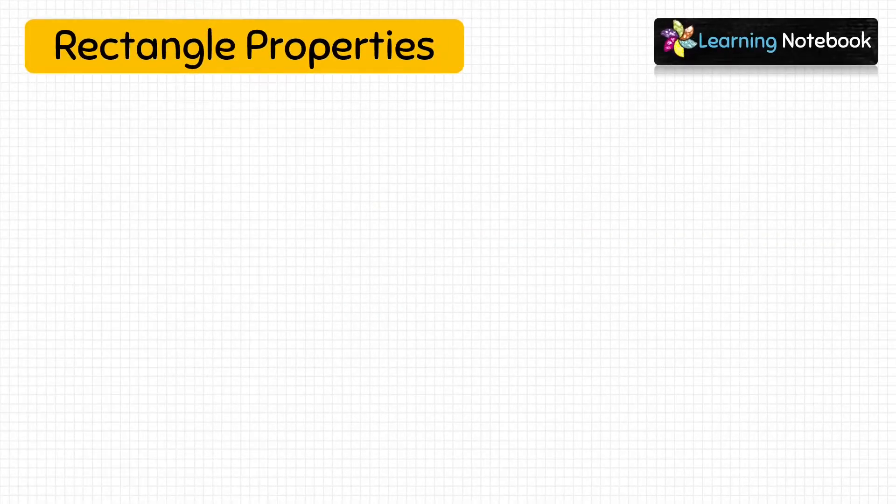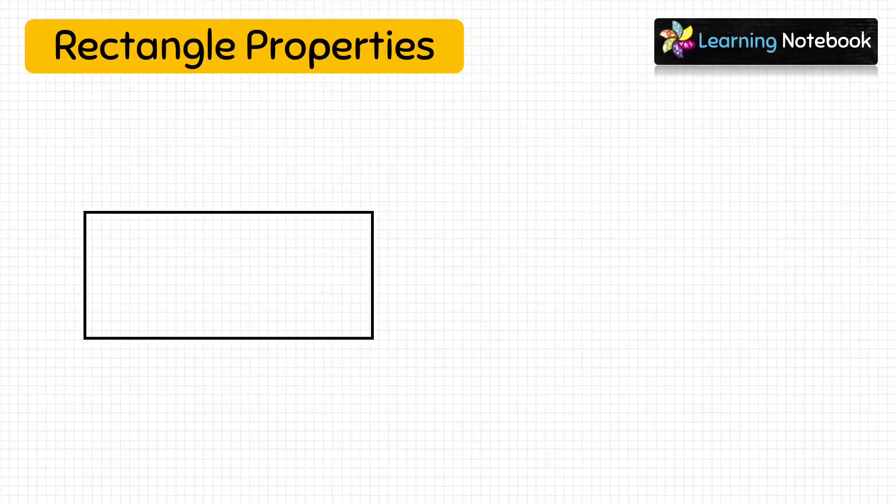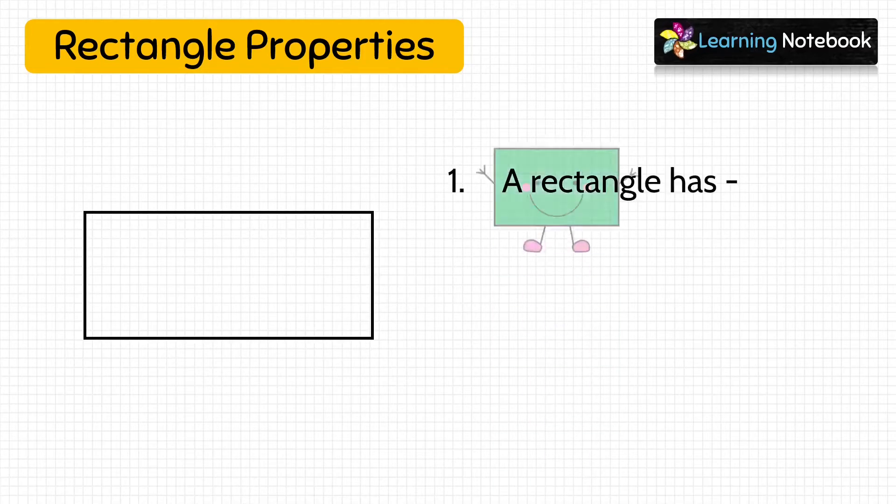Let's discuss these basic shapes one by one. First is rectangle. This is a rectangle. A rectangle has four sides and four corners.